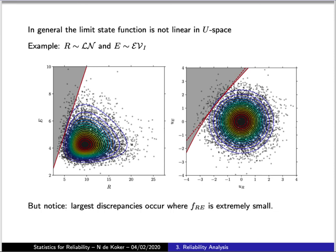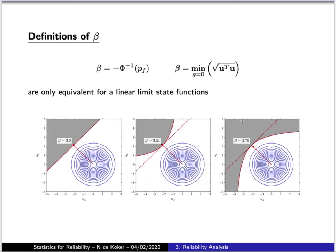Comparing that curved line to a straight line tangent to it at the design point, the largest discrepancies occur in areas where the relative likelihood is extremely small. As a result, the first-order effect of having a non-linear limit state function does not have a large effect on the assumption of spherical symmetry and calculating the reliability as the point of closest approach. Nonetheless, it is useful to understand the effect of a non-linear limit state line.